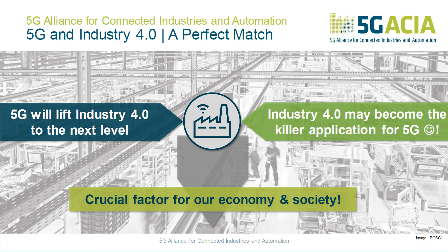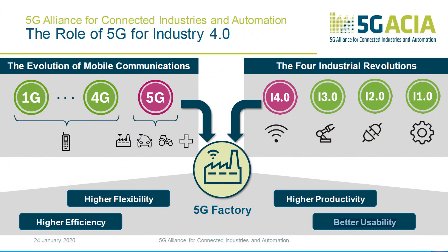5G Alliance for Connected Industries and Automation, or 5G-ACIA, believes that 5G and Industry 4.0 are a match made in heaven and that 5G will lift Industry 4.0 to the next level. While mobile technologies and industrial revolutions have happened separately, the 5G factory of the future brings them together to fulfill industry requirements that cannot be fulfilled by either alone. We think that the Industry 4.0 revolution will start with 5G but will not finish with 5G — it will continue beyond 5G as there are many technical challenges that still need to be solved.